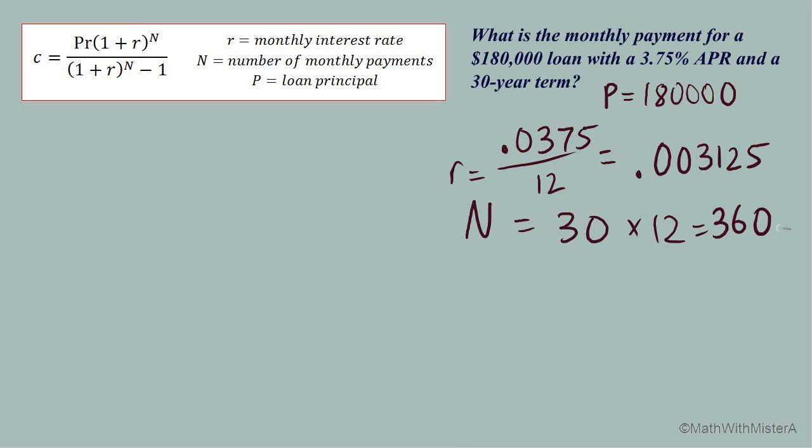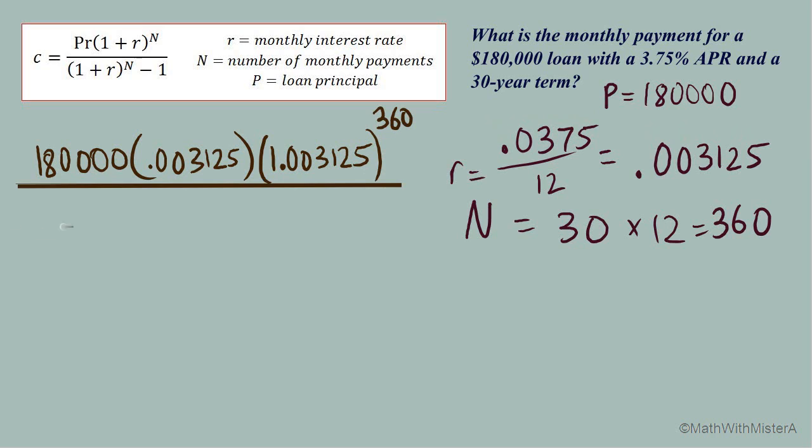Now we'll begin to substitute these numbers into our formula. 180,000 principal times the rate 0.003125 times 1 plus 1.003125 to the power of n 360. In the denominator we've got the 1 plus r again, 1.003125, and to the power of n 360 and subtract 1.